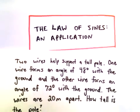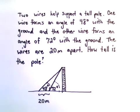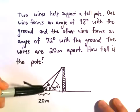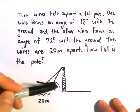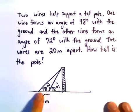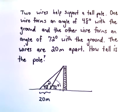Alright, so in this video we're going to do one more application using the law of sines. Suppose we've got two wires that are supporting a pole. One wire forms an angle of 48 degrees with the ground, and the other one forms an angle of 72 degrees with the ground. And we know that the wires are 20 meters apart. We want to know how tall the pole is.